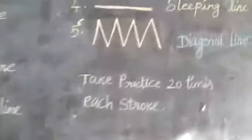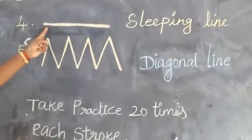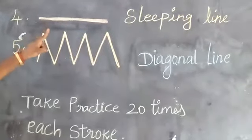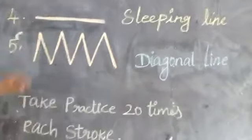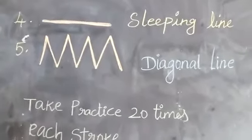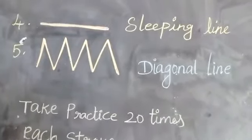Fourth one, this is sleeping line. All of you tell me, this is sleeping line. Draw a line in horizontal position. This is sleeping line.